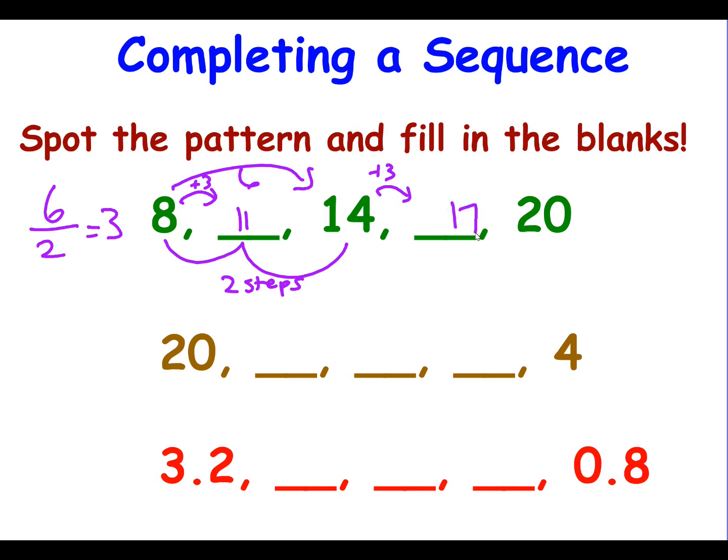So the golden rule is, look at your gap and what it's doing. In this case, it's going down by 16. And count the number of steps. 1, 2, 3, 4. So to get from 20 to 4, I have 1, 2, 3, 4 steps. Divide the gap by the number of steps. And it's telling me each step goes down by 4. So I'm subtracting 4 every time.